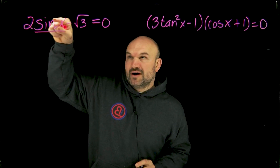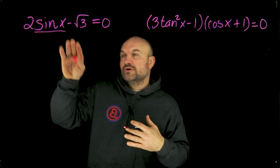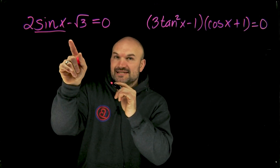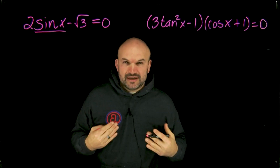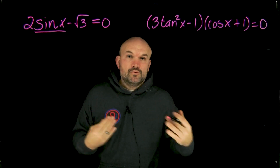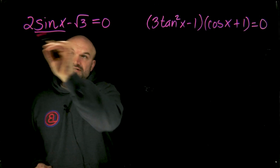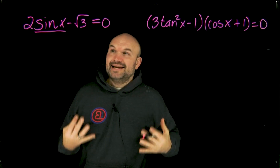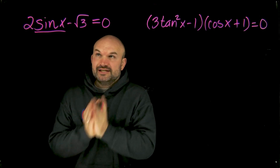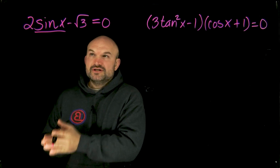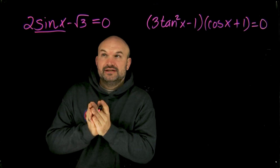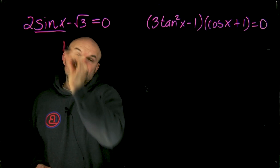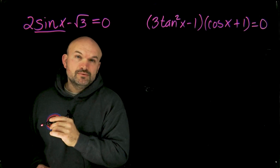Remember, we're trying to solve for x, which represents the angle that's going to make this equation true. So let's isolate everything to make it easier to compute what angle we're actually looking for. Using our inverse operations just like we did in algebra class, we undo addition and subtraction first, then undo multiplication and division. So we add square root of three on both sides and then divide by two on both sides.